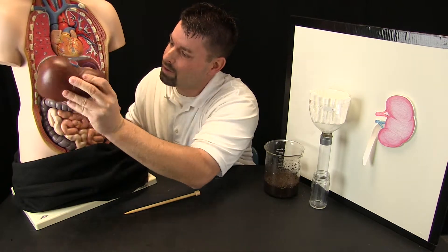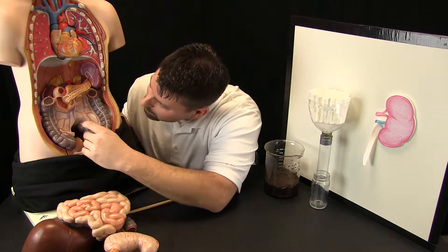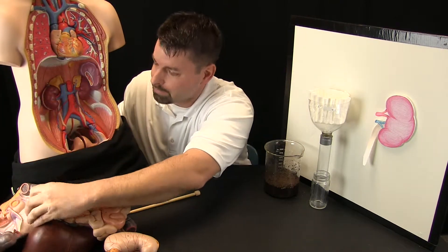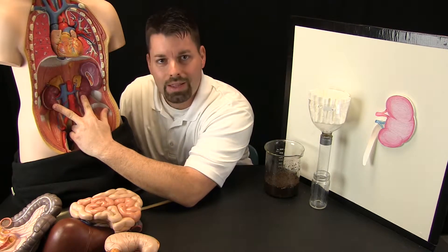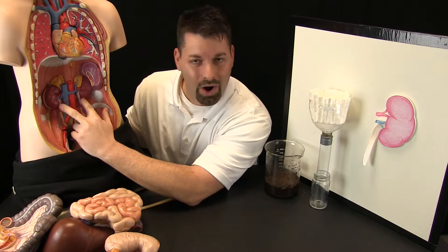So, let us take out the liver, the stomach and intestines. Take this out. And you will notice these two bean shaped organs that scientists call our kidneys.